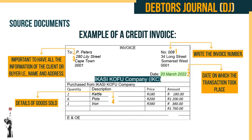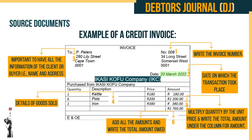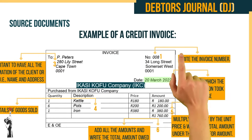Number four: complete the details of goods sold, i.e. quantity, description, and unit price. Number five: multiply quantity by the unit price and write the total amount under the amount column. Number six: add all the amounts and write the total amount owed.